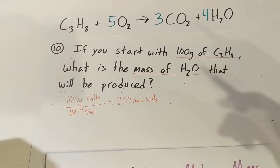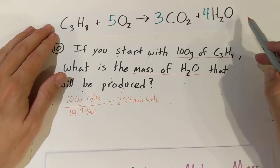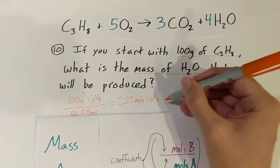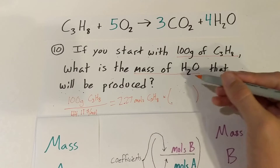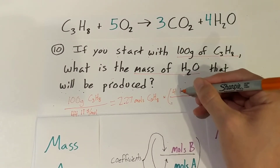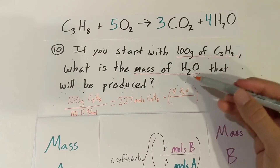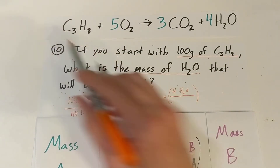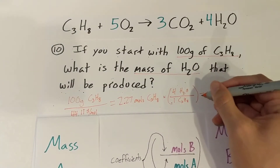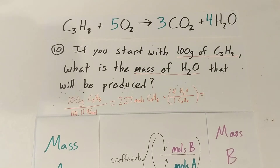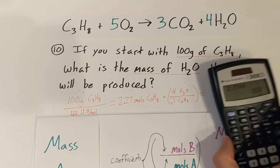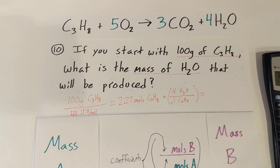From here we've got our moles, so now we can do our mole conversion using the coefficients from the equation. We multiply — put the coefficient of what we want to get on top: 4 for water. Put the coefficient we start with on the bottom: 1 for propane. Do that math: 2.27 times 4 gives us 9.08.